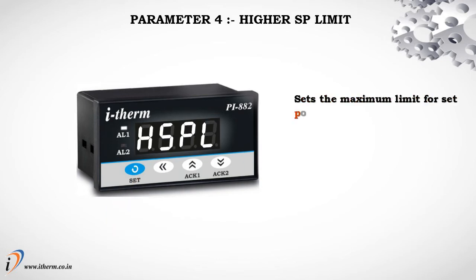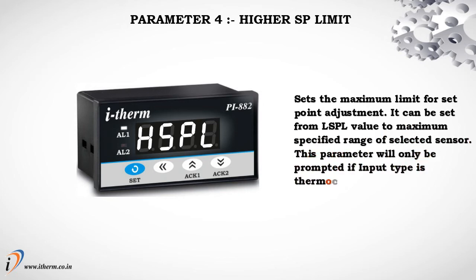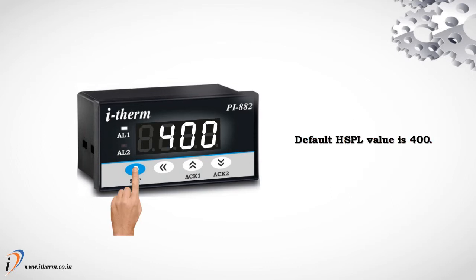Parameter 4: Higher Setpoint Limit (HSPL). This sets the maximum limit for setpoint adjustment. It can be set from the LSPL value to the maximum specified range of the selected sensor. This parameter will only be prompted if input type is thermocouple or RTD. Default HSPL value is 400.